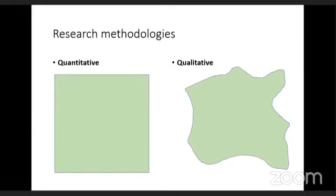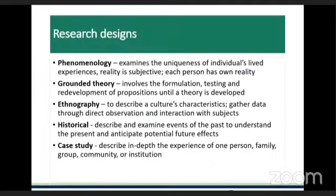In a nutshell, quantitative research is very structured and you are only allowed to operate within the boundaries of that specific phenomenon, whereas qualitative research is unstructured and you essentially go about finding knowledge as you come across certain data.